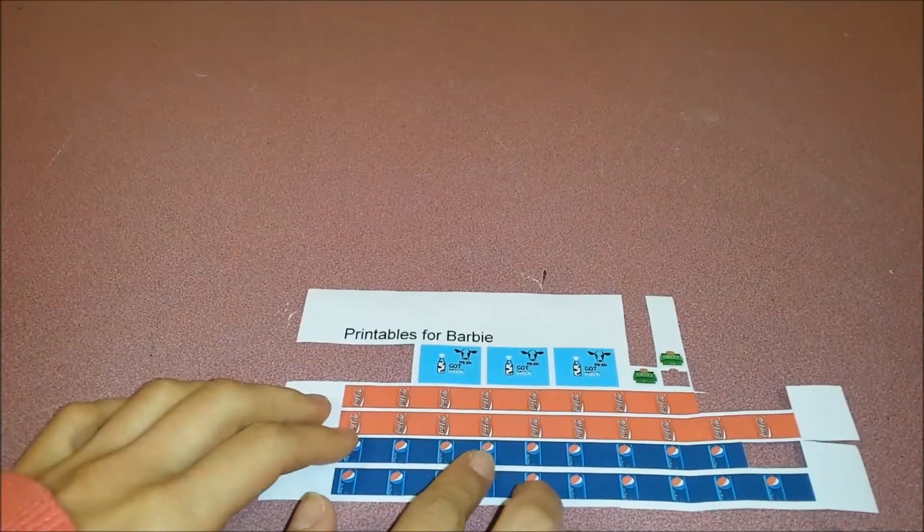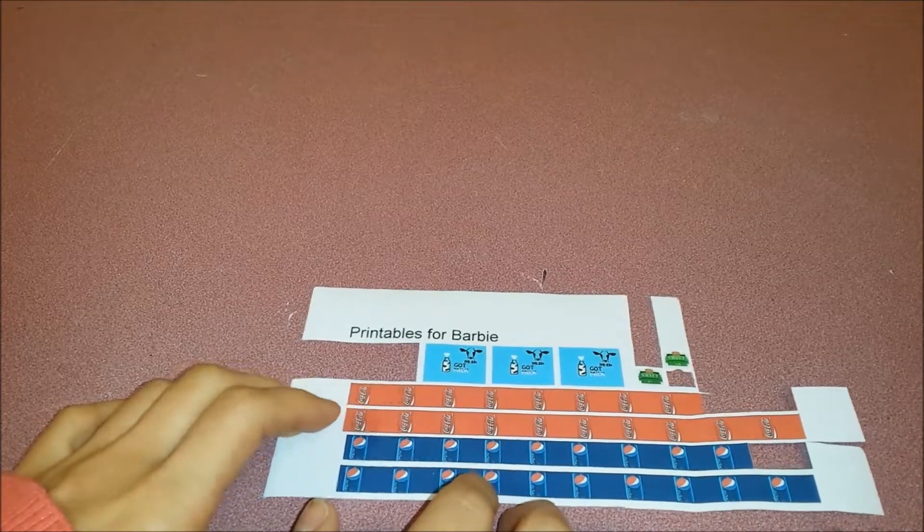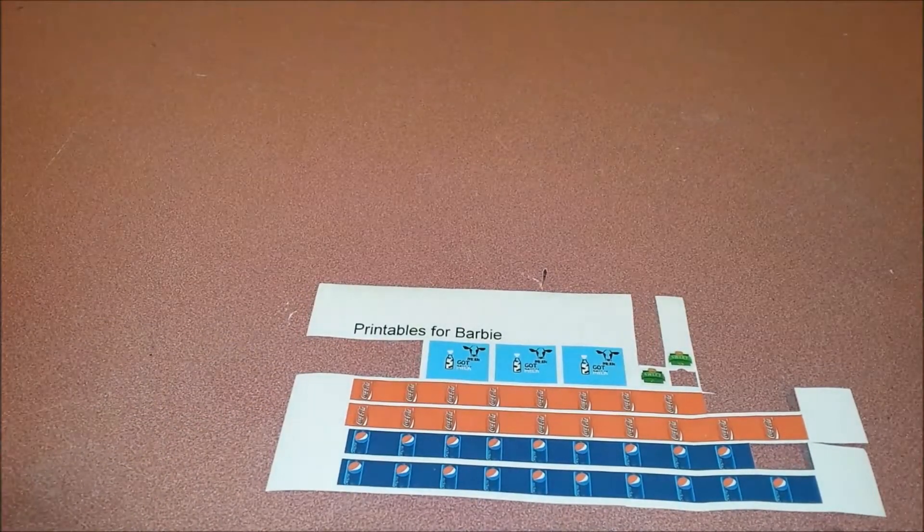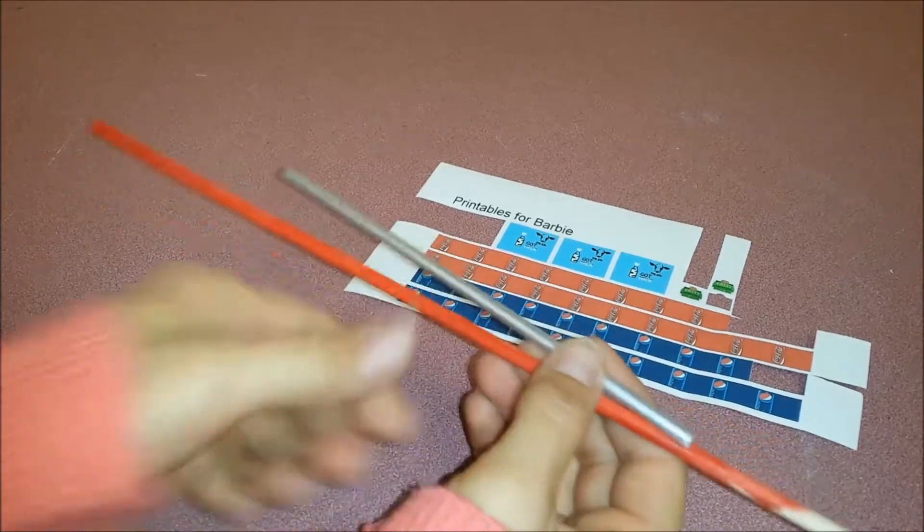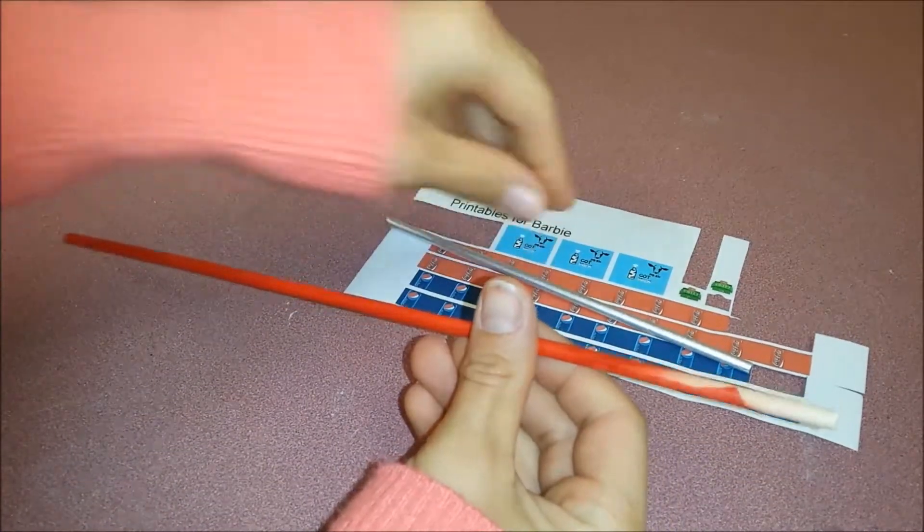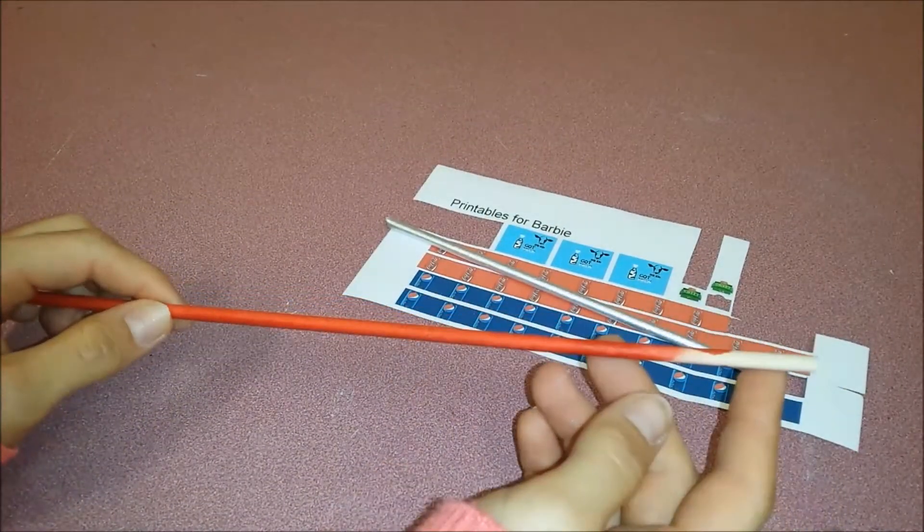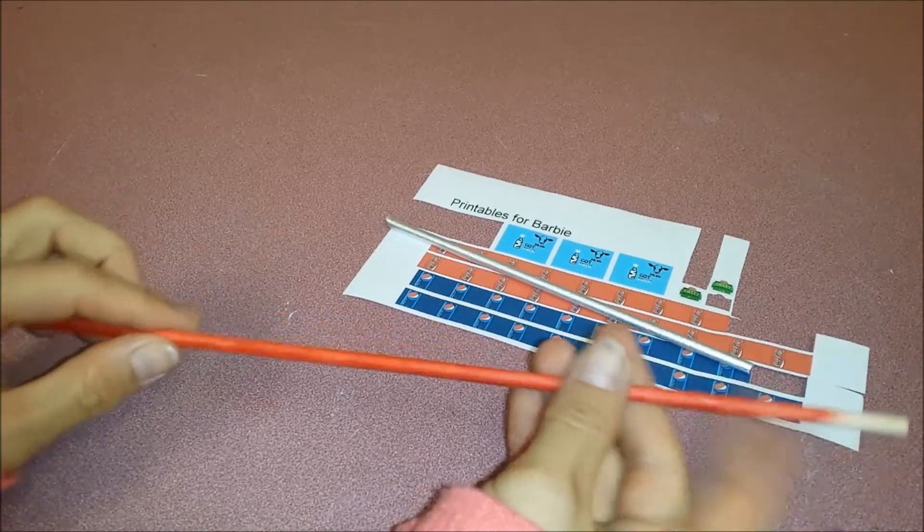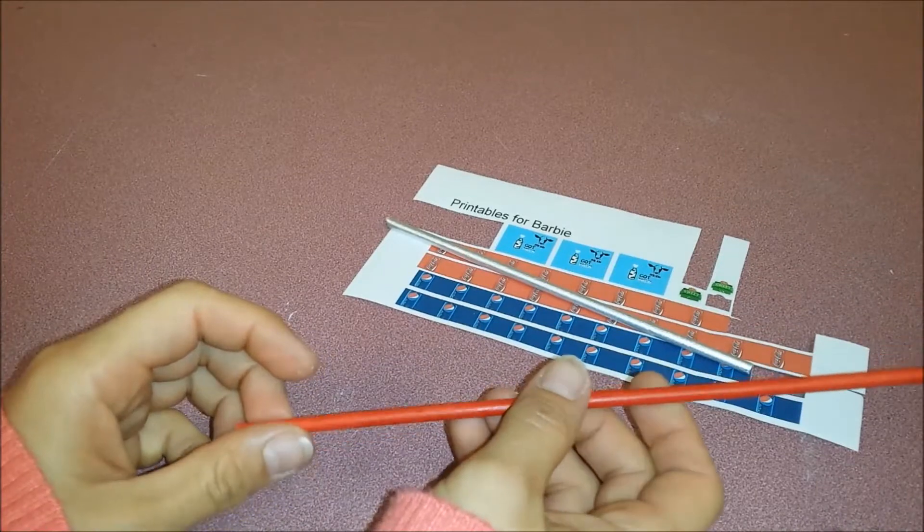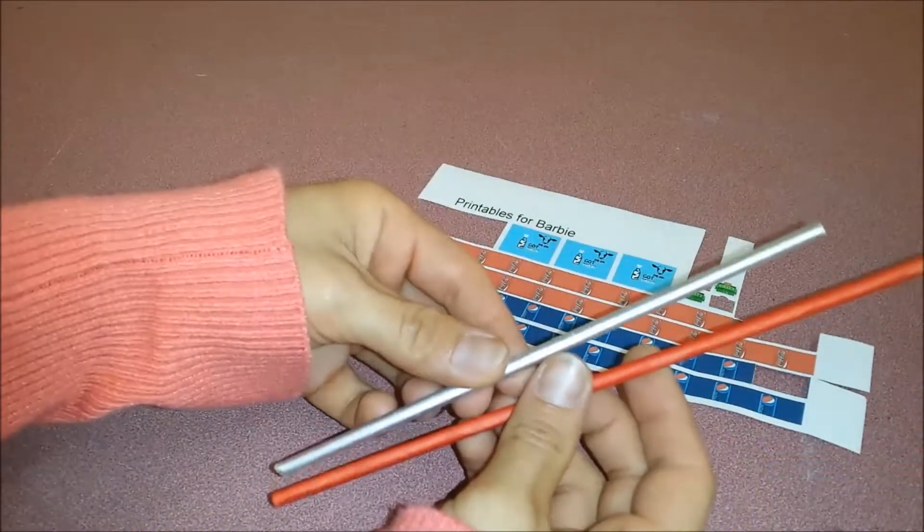Today we're going to be making can drinks. For these you'll need round wooden sticks that I usually get from Walmart at the craft aisle. This one I painted red and this